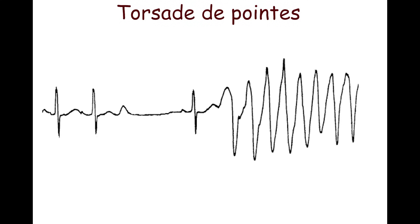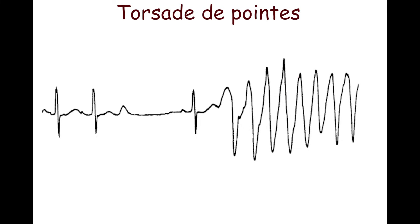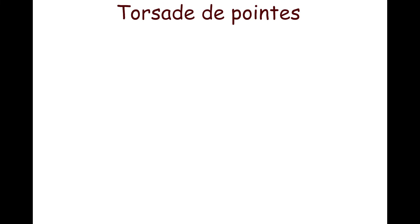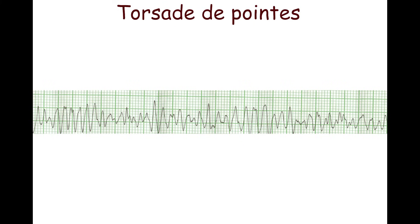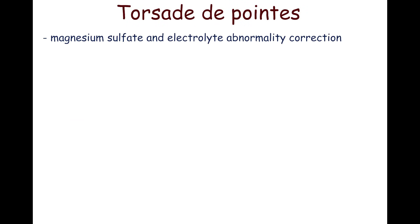Torsade de pointes is characterized by a specific pattern of twisting of the QRS complexes around the isoelectric line. This type of polymorphic ventricular tachycardia is associated with a prolonged QT interval and is usually triggered by R-on-T ventricular extrasystole. High ventricular rate, usually more than 220 beats per minute, increases the risk of degeneration to ventricular fibrillation. Magnesium sulfate and electrolyte abnormality correction are used for torsade de pointes.